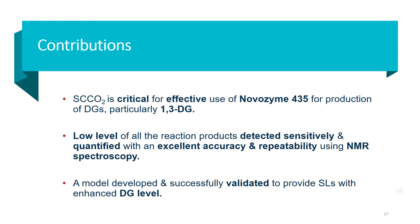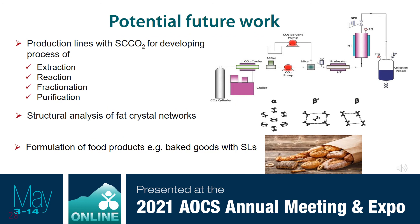These are the contributions made by this study. SCCO2 is critical for effective use of Novozyme 435 for production of DGs, particularly 1,3-DG. Low levels of all reaction products were detected sensitively and quantified with excellent accuracy and repeatability using NMR spectroscopy. A model was developed and successfully validated to provide structural lipids with enhanced DG level. Possible future work can develop manufacturing with greener production lines at lower temperatures and higher rates, including oil extraction, reaction process, fractionation, and purification. Other future work can address structural analysis of fat crystal networks and formulation of food products such as baked goods with structural lipids.